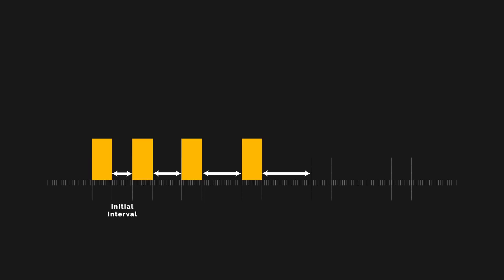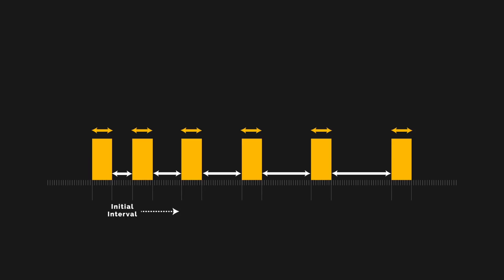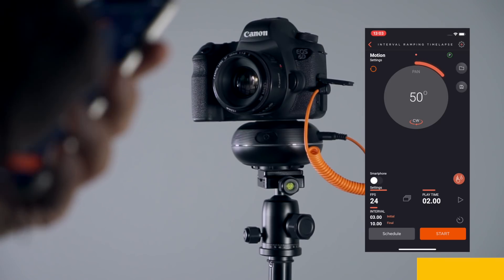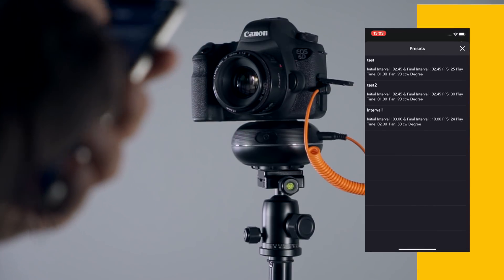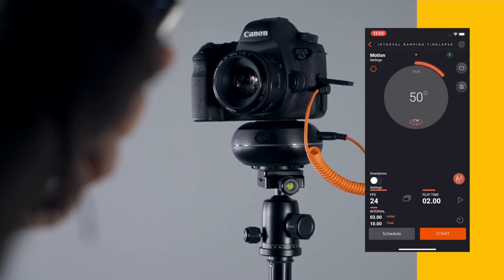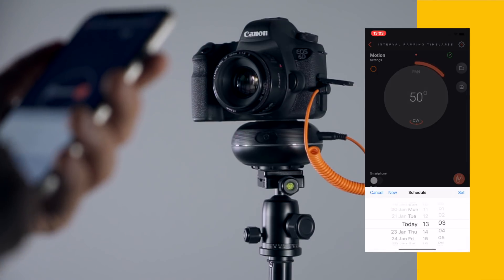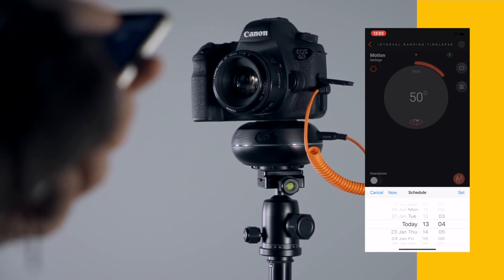The process starts with the initial interval, and the interval is changed towards the final interval linearly after each frame is taken. The ramping can be done either ascending or descending depending on initial and final interval values. You can save your settings for your next shoot and use them whenever you want. You can also schedule your interval ramping time-lapse for a specific time.